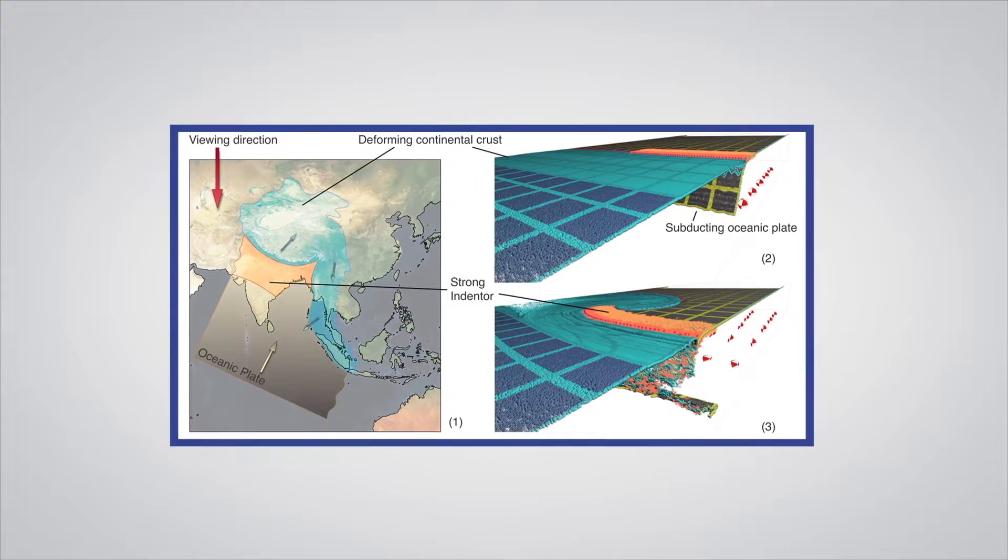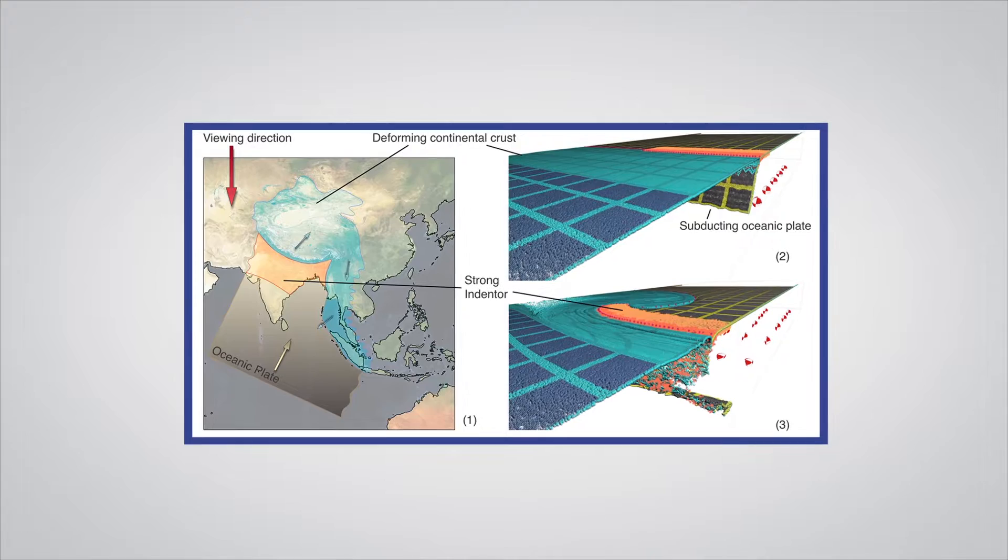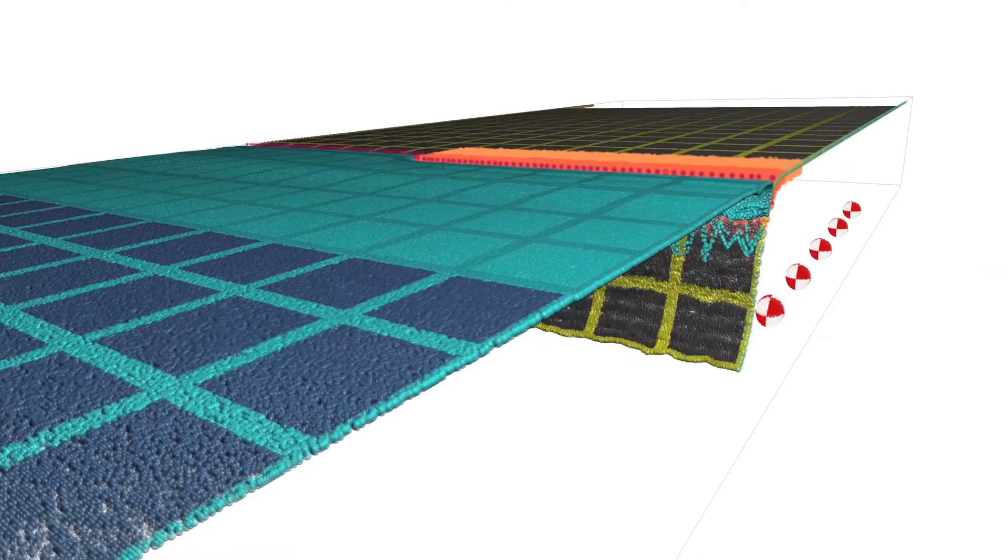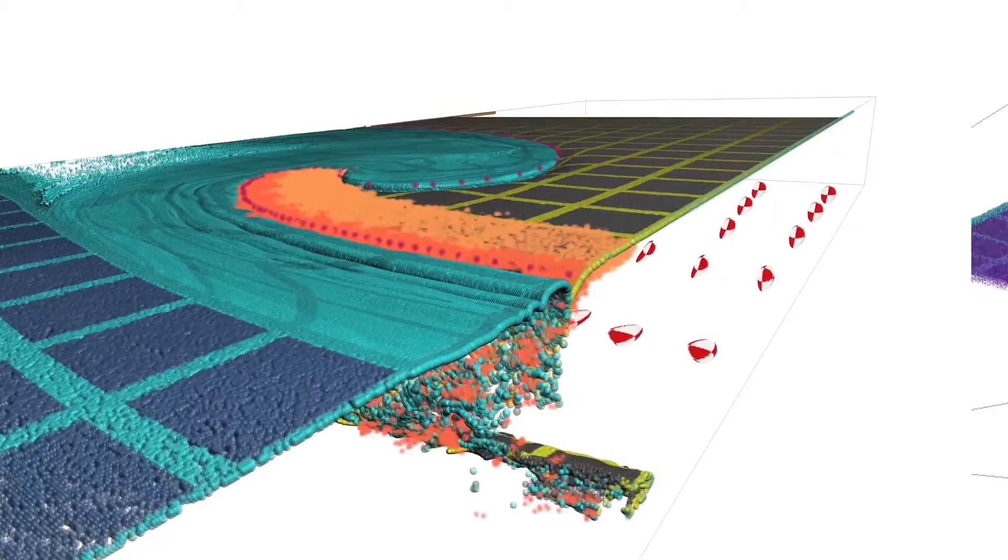This work started as an attempt to understand the ancient geological structures in the Australian continent and to see if they might be the remnants of long-dead collisions of ancient exotic terrains with the continental margin. It led to a reimagining of the manner in which subduction zones evolve globally and through time.